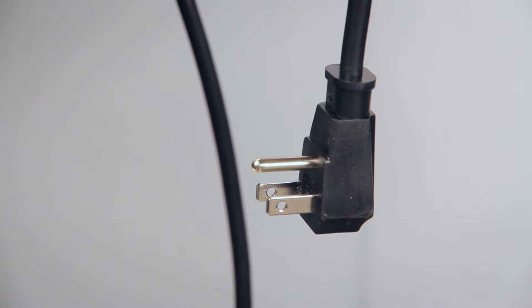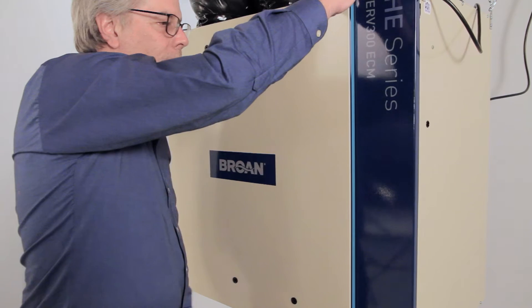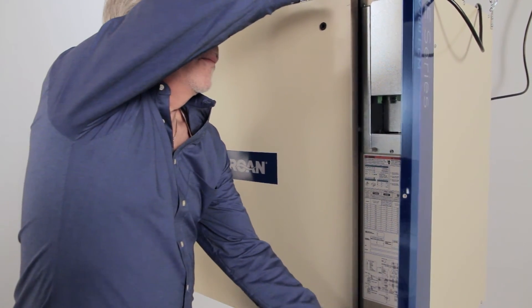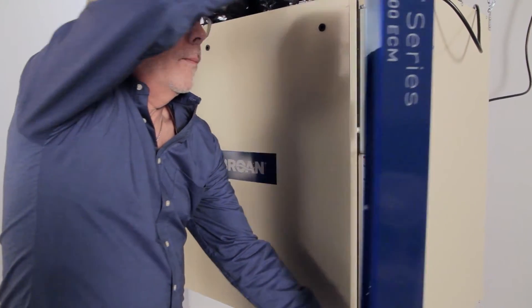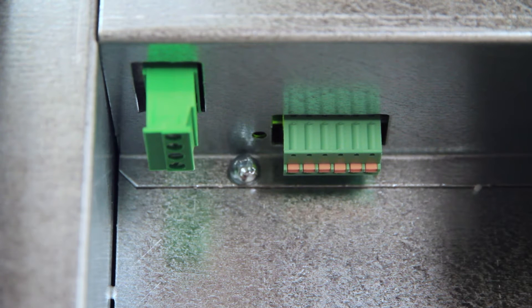Make sure the unit is unplugged from the power source. Remove the panel door by lifting the door up while open at 90 degrees. Open the side panel to access terminal blocks.